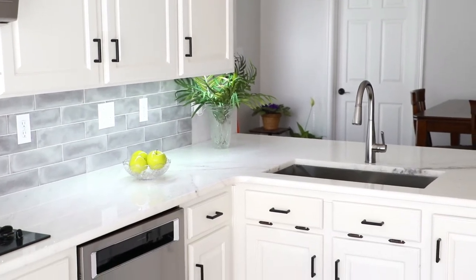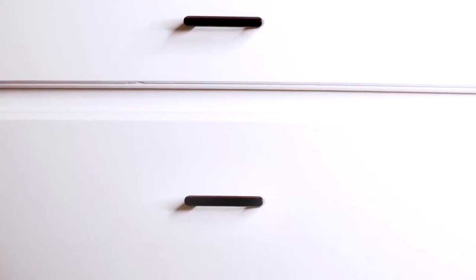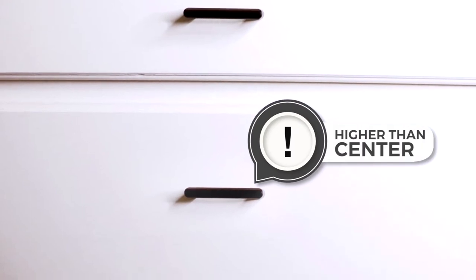For most drawers, you'll want to place your pulls in the center of the drawer. If you have deep bottom drawers, you can place your pulls higher than center, closer to the top edge so they are easier to reach.